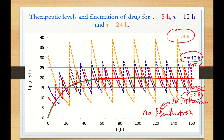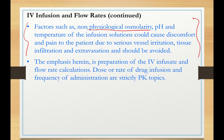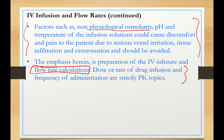In fact, IV infusion is the most common method of drug administration in the clinic. Never forget to adjust the osmolarity of IV fluids to match the physiological osmolarity. The emphasis here is on preparation of IV infusate and flow rate calculations. How to calculate the dose or rate of drug administration by IV infusion is a topic for the pharmacokinetics course.